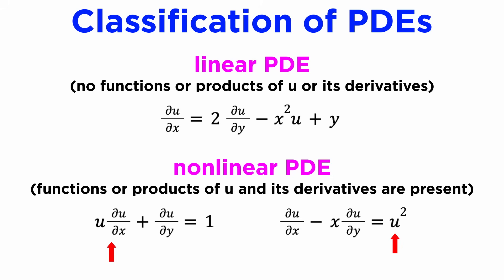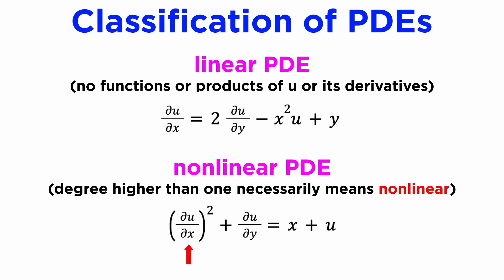A PDE is linear if there are no functions or products of the dependent variable, otherwise it is nonlinear. This means that any PDE with a degree higher than one is necessarily nonlinear.